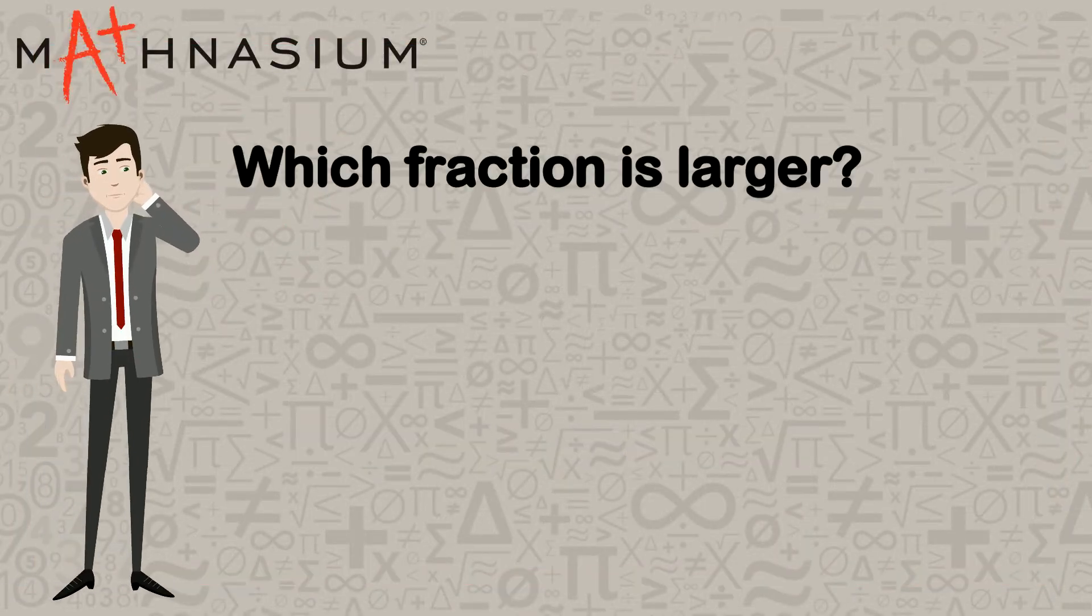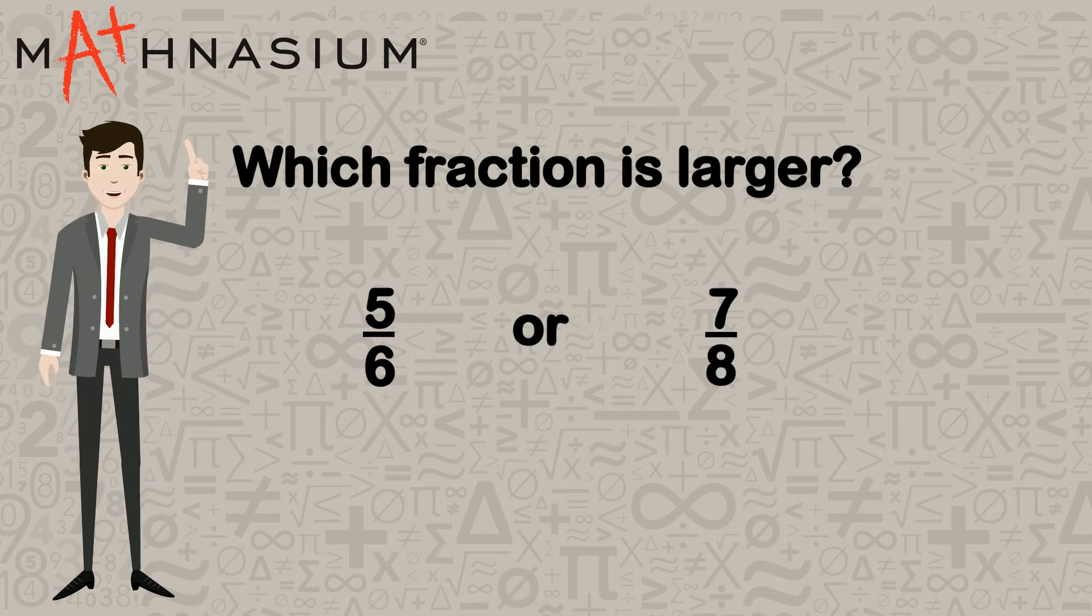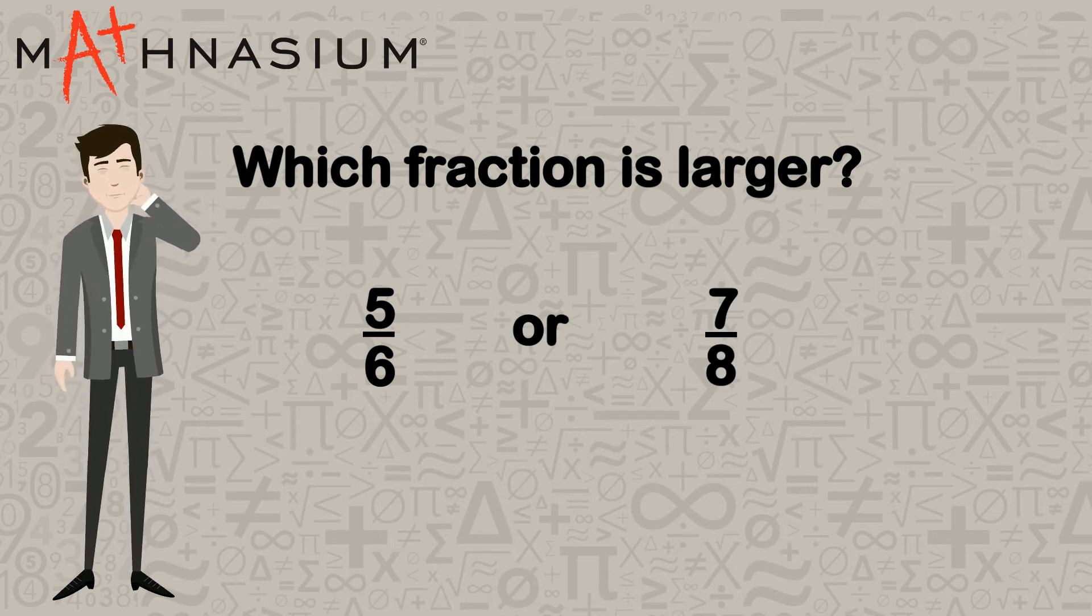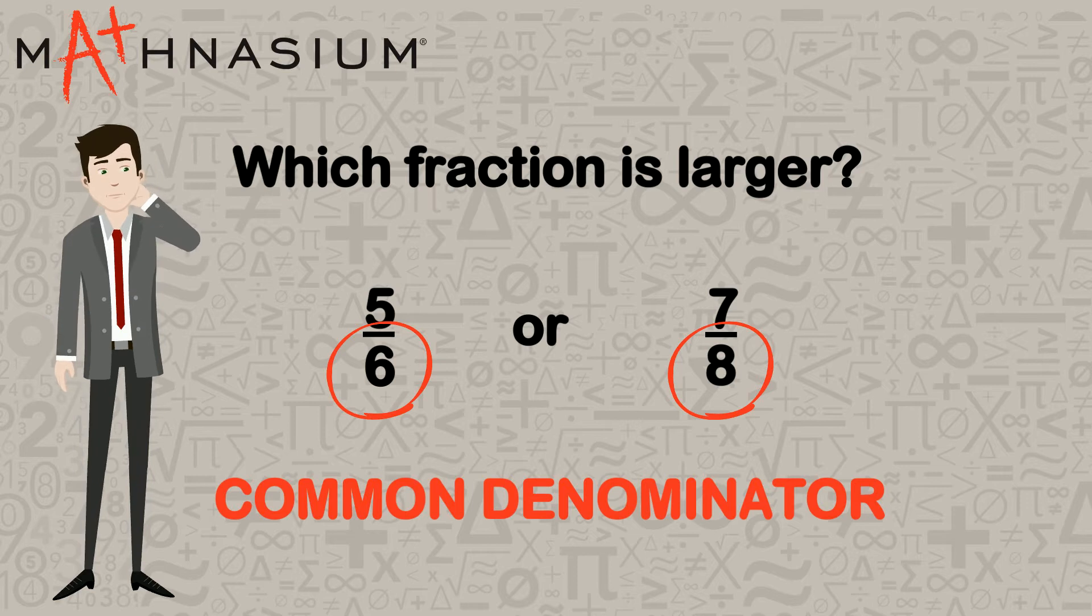Let's figure out which fraction is larger, 5 sixths or 7 eighths. We could figure this out by finding a common denominator for each fraction, but let's see if we can think about this mentally.